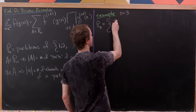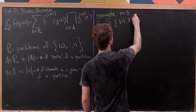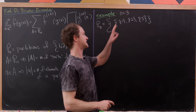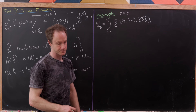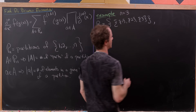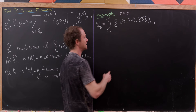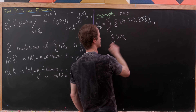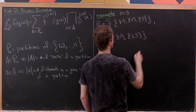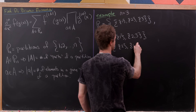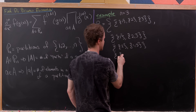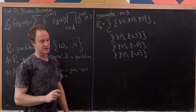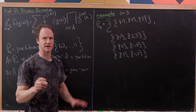So if n=3, then P_3 will be all of the partitions of {1,2,3}. Our first partition is made of singletons: {1}, {2}, {3}. The next flavor of partitions each contain one singleton and one doubleton: {1}, {2,3}; then {2}, {1,3}; then {3}, {1,2}. And the last partition is just the whole set: {1,2,3}.